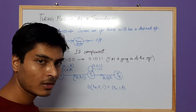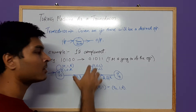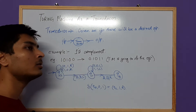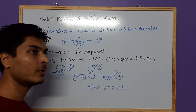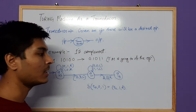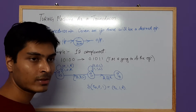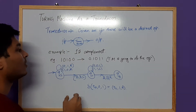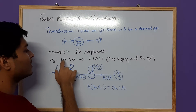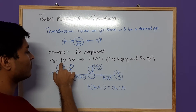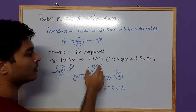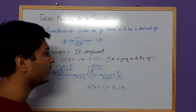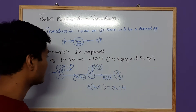For a simple example, I'm taking one's complement. One's complement means the respective changes in ones and zeros — zeros are converted to ones, ones are converted to zeros. For example, if the input is 1 0 1 0 0, then the output would be 0 1 0 1 1, and the Turing machine is going to do this operation.